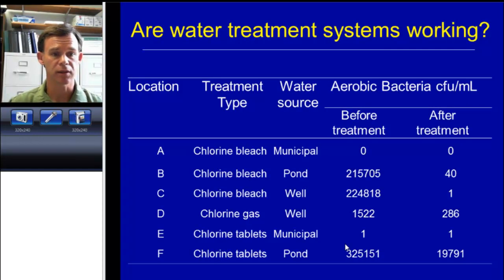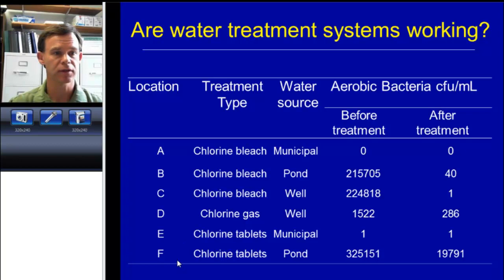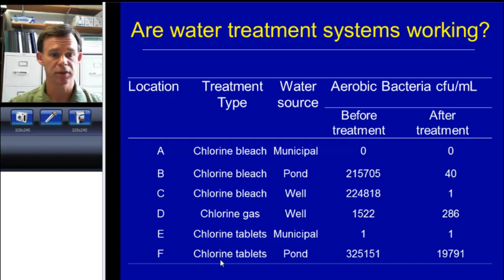Another thing that Dustin did was he took samples through different irrigation systems before and after treatment. Here we have six different greenhouses and nurseries. These were the different types of chlorination that we're using as examples. Chlorine can be provided as a gas, as a liquid as sodium hypochlorite, or as tablets as calcium hypochlorite.